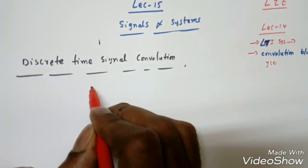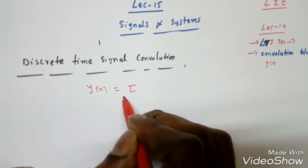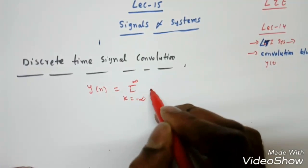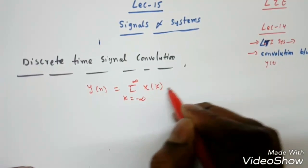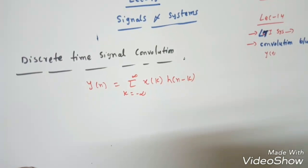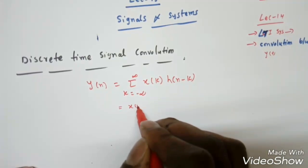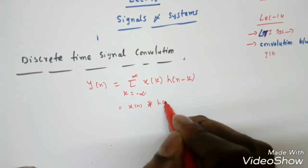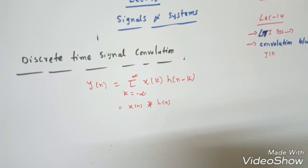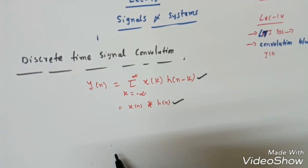The convolution formula is: y(n) = Σ (k = −∞ to ∞) x(k)·h(n−k). This is the convolution sum between x(n) and h(n), written as x(n) convolved with h(n). These two formulas — the expression and the procedure — are what we use to find the output response y(n).